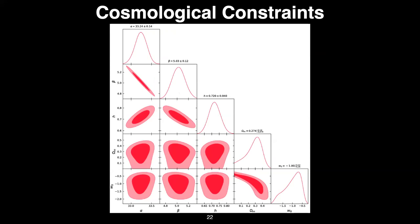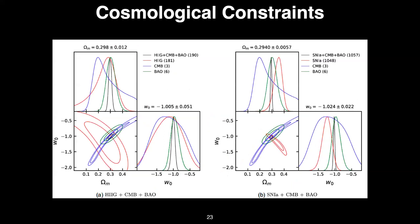When we also fit the nuisance parameters alpha and beta — the slope and zero point of the L-sigma relation — together with all cosmological parameters, H0 remains around 0.72, Omega matter goes up slightly to 0.274, which is more consistent with supernovae 1a results, and W0 gets exactly at minus one — very consistent with the cosmological constant.